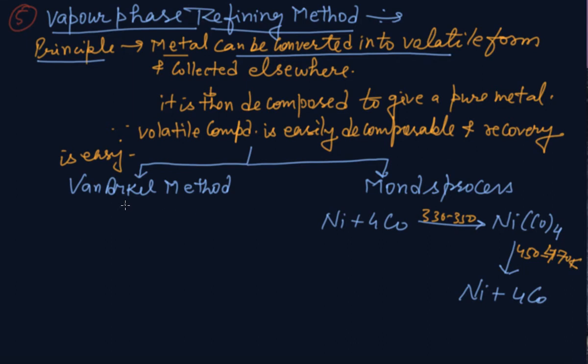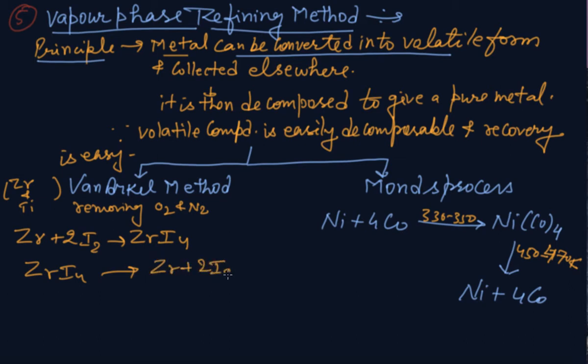Then comes Van Arkel method. It is used for removing all the oxygen and nitrogen present as impurity in certain metals like zirconium and titanium. After V in ABCD, Z will come. Van Arkel method stands for zirconium. The reaction is: Zr + 2I₂ gives ZrI₄, and ZrI₄ when heated gives back Zr + 2I₂.